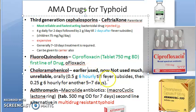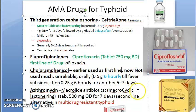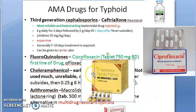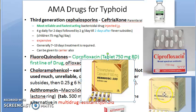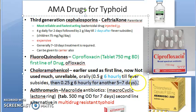Chloramphenicol was the first line drug before — earlier used as first line, but not now; it is no longer reliable. The dose used to be 500 mg (0.5 gram) 6-hourly until fever subsides, then 0.25 gram 6-hourly for another 5 to 7 days.